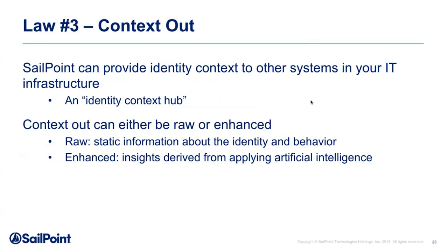Law three: send identity context back out. Now you have your identity context hub with all the raw data collected. You can send that out to other systems in two ways. One is raw data — raw events, raw information about users, what entitlements they have — spread throughout your systems to help them make decisions. But where it gets really interesting is enhanced identity context: you take that giant lump of events, entitlement data, and historical context and let the machine do some thinking.